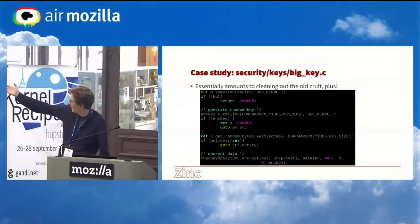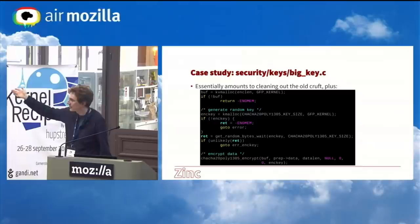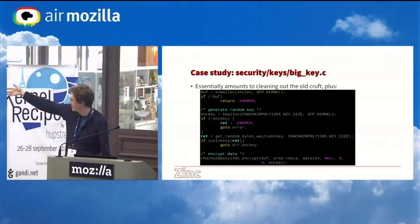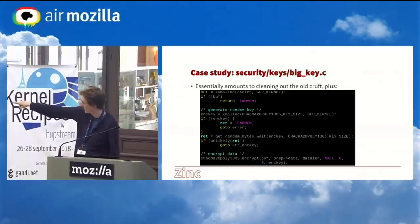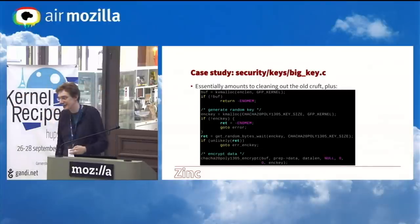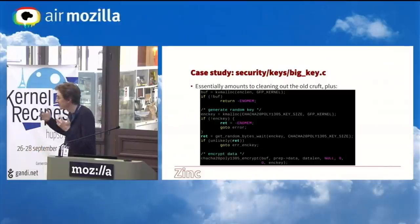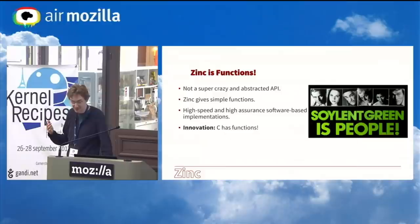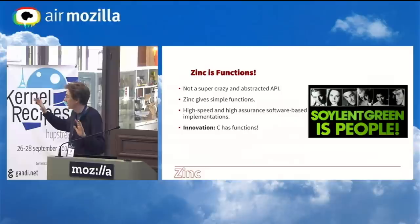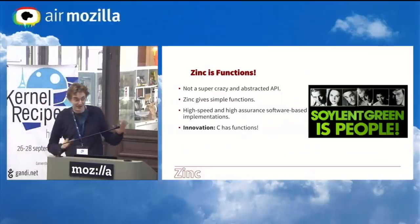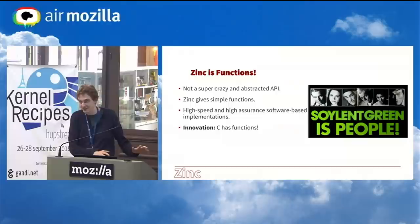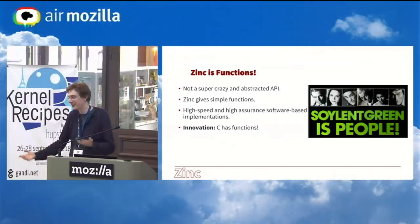Those 28 lines essentially amount to this: we allocate the buffer, BigKey wants a new random key each time and stores it past the stack, so we allocate a place for the encryption key, choose the random bytes, and then the Zinc part is just that last line where we call encrypt, pass it the buffer and how big it is, and then it does it. That's it. It's a series of functions. This is not a crazy API — the innovation here is realizing that C has this thing called functions, and we can write them and use them and then everything goes well.